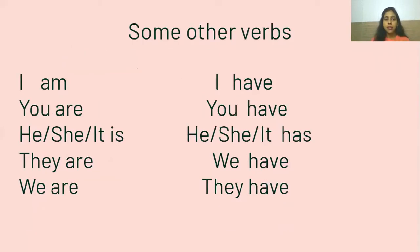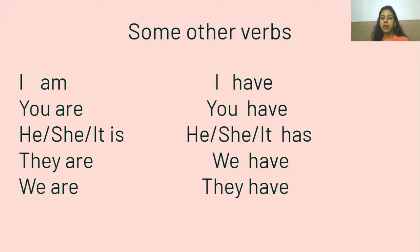Let's see two more verbs in the simple present tense. For the verb be, we have: I am, you are, he/she/it is, they are, and we are. And then we have the verb have or has. With I, you, we, and they we use have; and with he, she, it we use has.